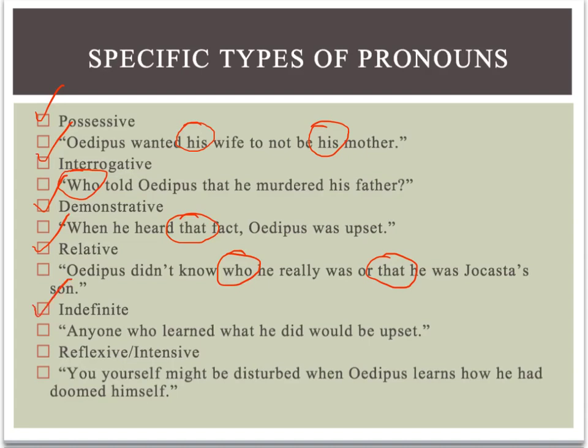Indefinite pronouns are pronouns that stand in for undefined or indistinct individuals or groups of individuals. They're pronouns like everyone, everybody, anyone, anybody — there's not a specific person or persons being referred to. So in the sentence, anyone who learned what he did would be upset, we have an indefinite pronoun — it's anyone. There is no particular antecedent for that pronoun; it's pointing to a vague, indistinct group.